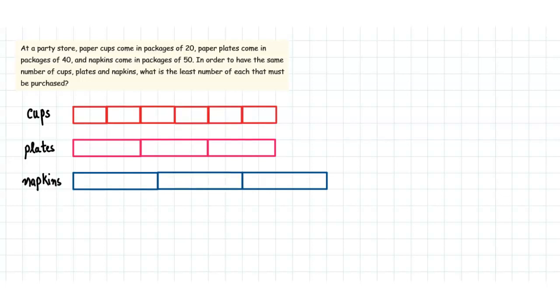We can see that we are trying to buy the cups, plates, and napkins in multiples. We are buying many of these - like here if I buy 20 into 6, I have 120 cups. But here I have 40 into 3, that is 120. And here it is 50 into 3, which is 150.